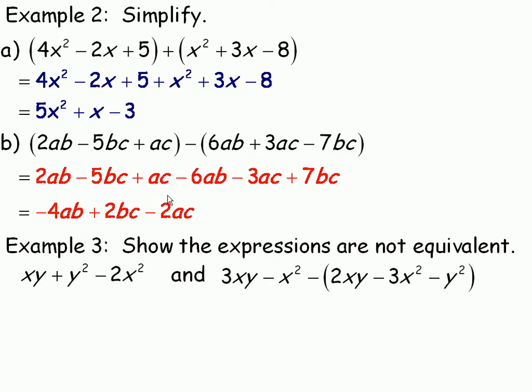2ab minus 6ab will be negative 4ab. Negative 5bc plus 7bc would be 2bc. And ac minus 3ac becomes minus 2ac. So that's the polynomial difference.